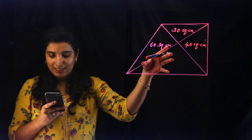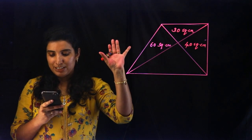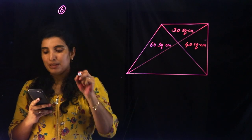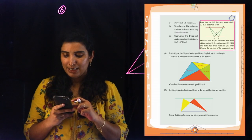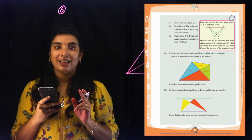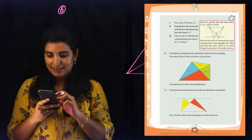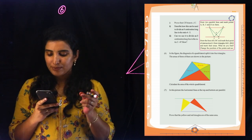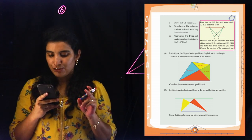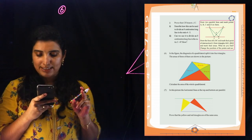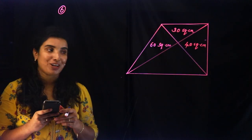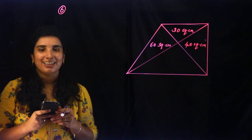Now, we will take a few figures and we will go through that question. In page 21 we will discuss that question in the chapter. Now the question is: in this figure the diagonals of a quadrilateral are split into four triangles. The areas of three of them are shown in the picture. Calculate the area of the whole quadrilateral. That's the question.